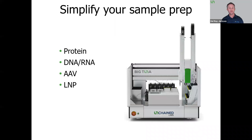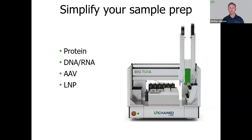BigTuna can simplify your sample prep. It can handle essentially any gene therapy biomolecule sample type you need to exchange or concentrate — protein, DNA, RNA, AAVs, or LNPs. It's fast without sacrificing ease of use, typically 30 minutes to set up and get your runs going, nor does it sacrifice your sample recovery or quality, as we saw in that selection of data in the previous slides.